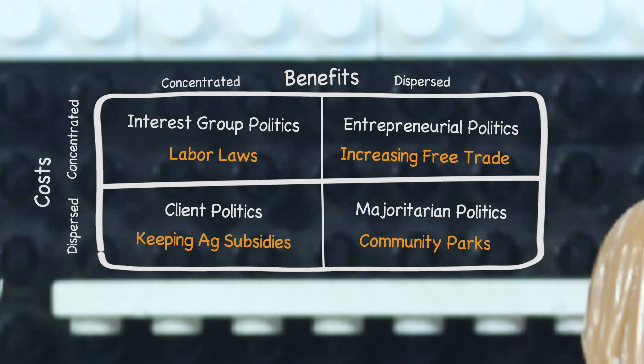Another example might be regulating air pollution from specific factories or industries. Doing so would lead to concentrated costs at those specific factories, but would have dispersed benefits for everyone in the form of better air quality. Again, this would be an uphill battle and would require some entrepreneurial politics.